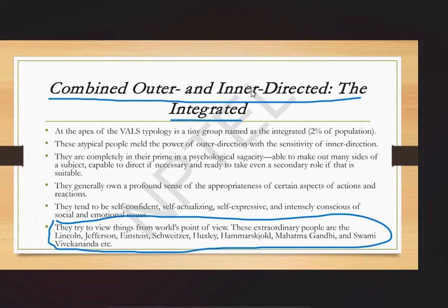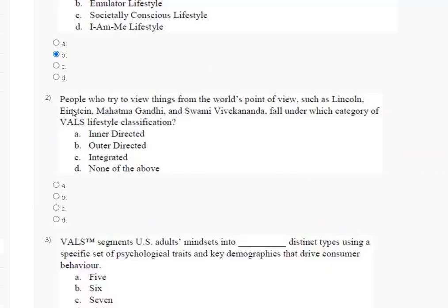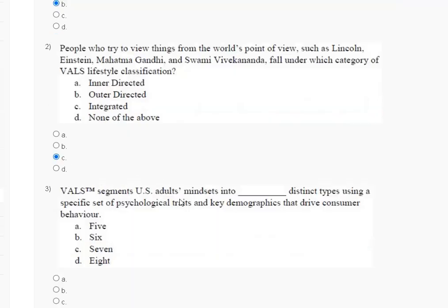The explanation for question number two: the integrated category combines outer and inner directed. These extraordinary people — Lincoln, Einstein, Mahatma Gandhi, and Swami Vivekananda — try to view things from the world's point of view. So the correct answer is option C, integrated, meaning a combination of inner-directed and outer-directed.